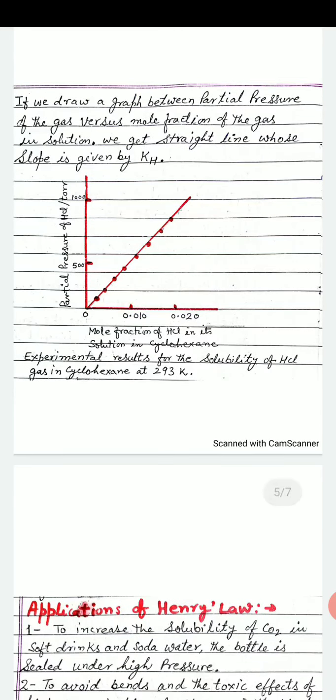If we draw a graph between partial pressure of the gas versus mole fraction of the gas in the solution, we get a straight line whose slope is given by KH.